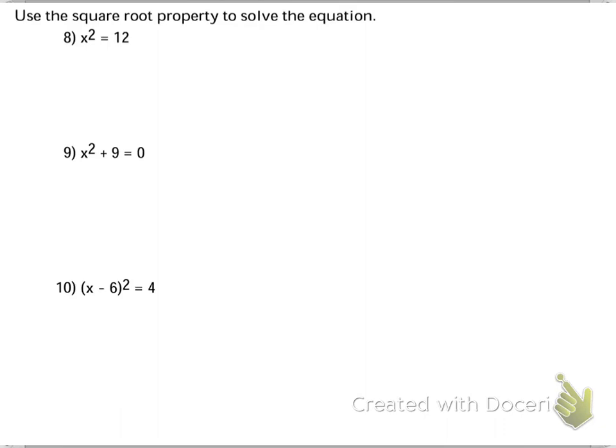So if I square root both sides, don't forget when you square root, you actually get this. The square root of x squared is plus or minus the square root of 12. Please don't forget that.